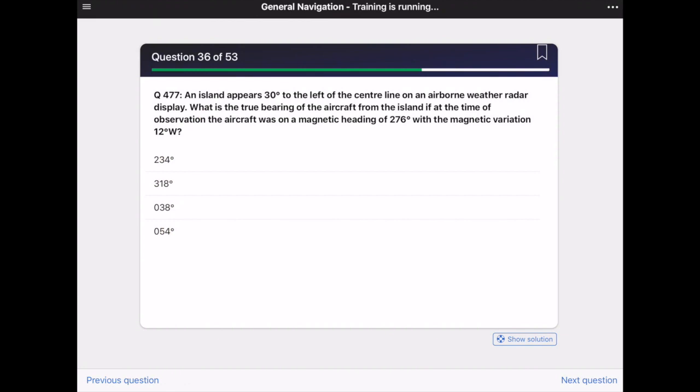So the question is: an island appears 30 degrees to the left of the centerline of an airborne weather radar display. What is the true bearing of the aircraft from the island if at the time of observation the aircraft was on a magnetic heading of 276 degrees with the magnetic variation of 12 degrees west? So again we have four different answers and of course only one of them is correct.